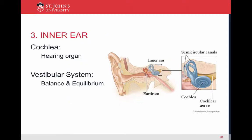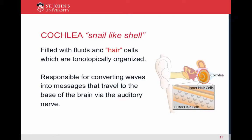The cochlea is your hearing organ. The vestibular system is important for balance and equilibrium. The cochlea means snail-like shell in Latin. It is filled with fluids and hair cells, which are tonotopically organized — meaning they are organized by frequency. The cochlea is responsible for converting waves into messages that travel to the base of the brain via the auditory nerve.